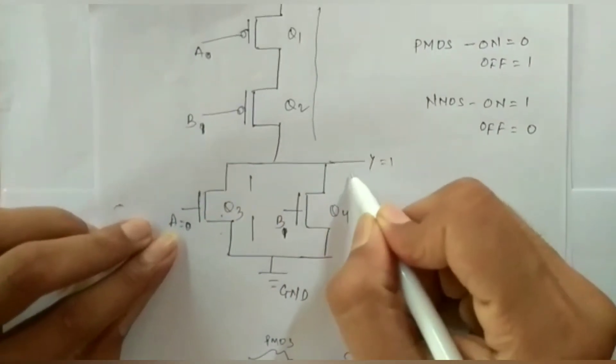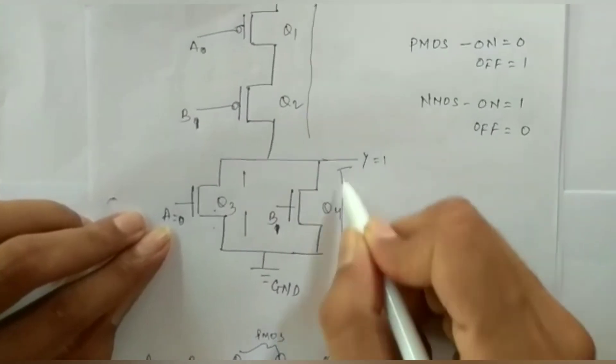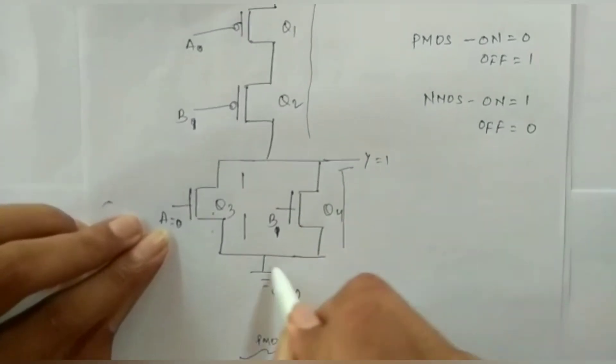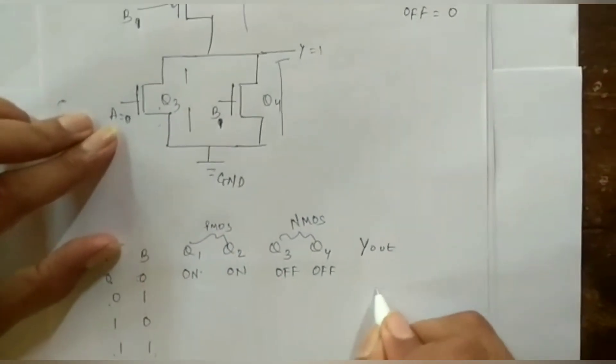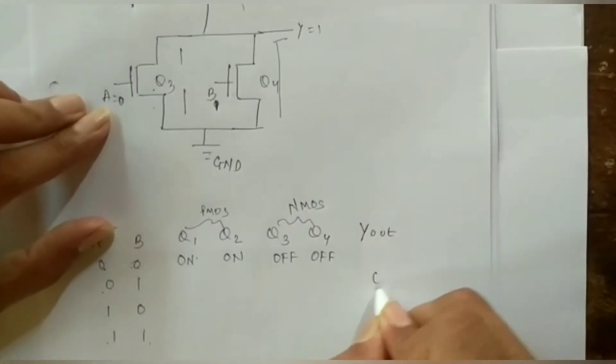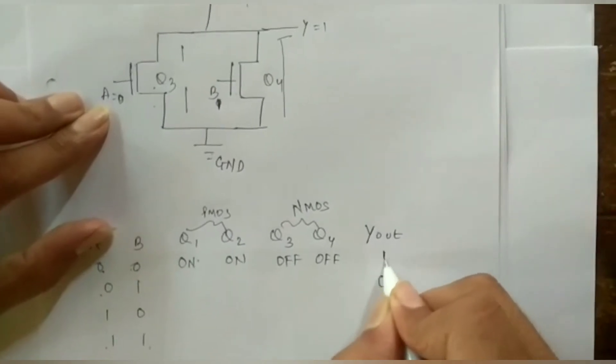But the connection here will be closed circuited and it is connected to GND. So output will be 0.